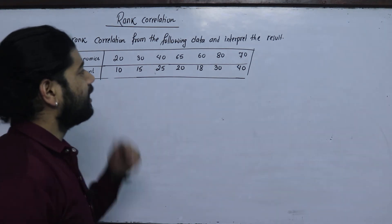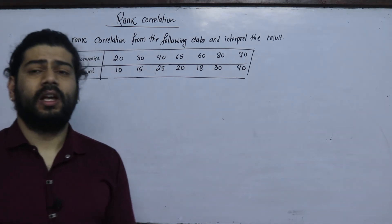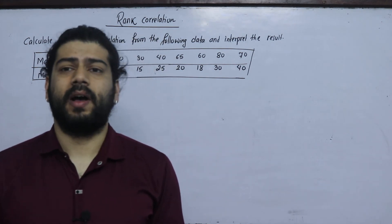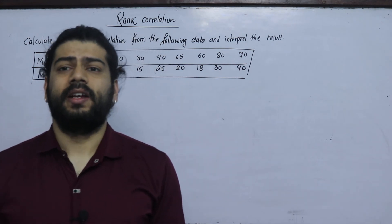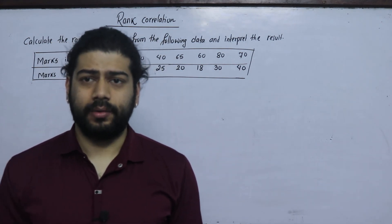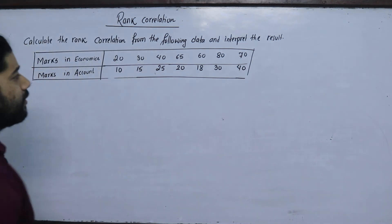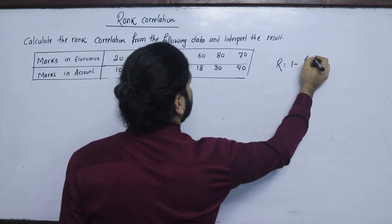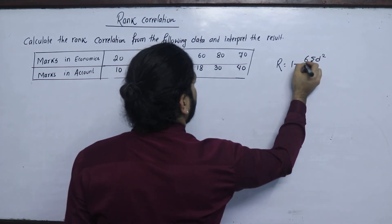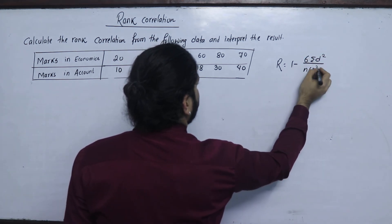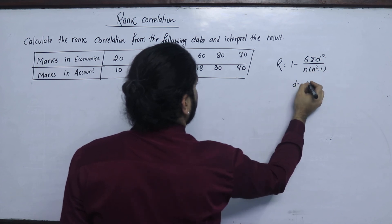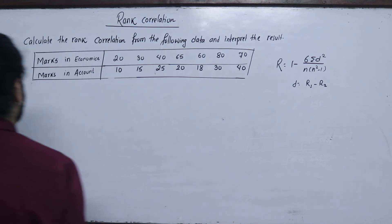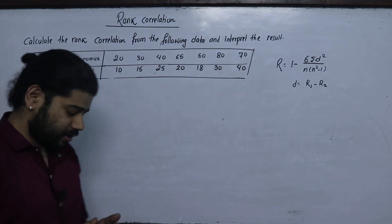I am going to work with repeat data, and also single data. The rank correlation formula is: R = 1 minus 6 times summation of d-squared, divided by n times (n-squared minus 1), where d is the first rank minus the second rank. This is an introduction to rank correlation.